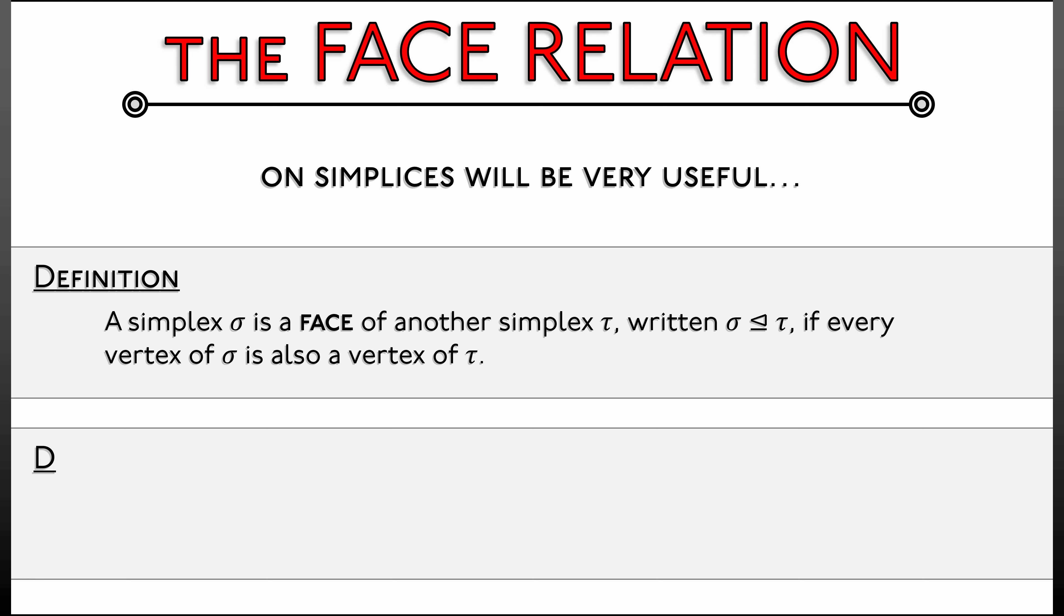There's a very important notion of codimension for faces. The codimension of a face sigma of tau is the difference in dimensions. It's the dimension of tau, the larger simplex, minus the dimension of sigma, the smaller simplex. Or I should say the potentially smaller simplex because, of course, tau is a face of itself, because it contains the same vertices. It is a face of codimension zero. You'll probably find that codimension zero faces are not all that commonly used. Codimension one faces, on the other hand, very, very useful in the future to us.